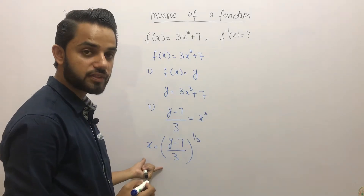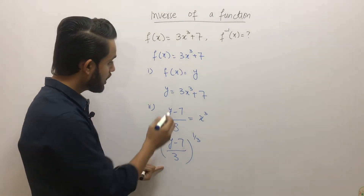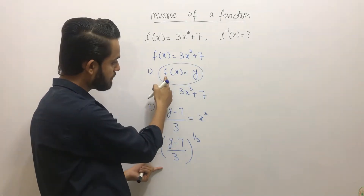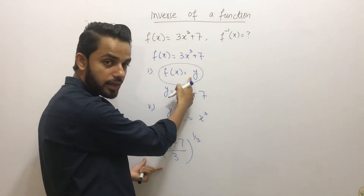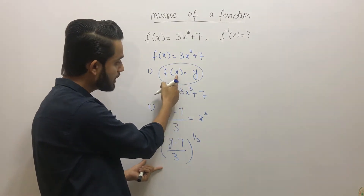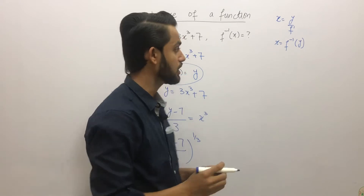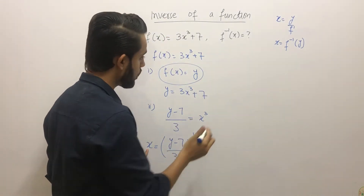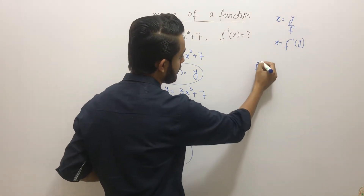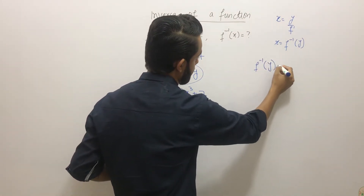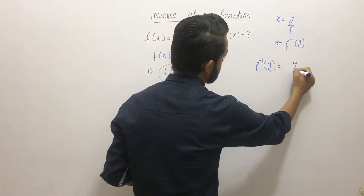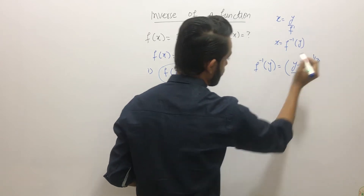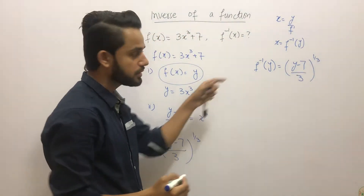Step 3: from step 1 we know f(x) = y, meaning x will always be replaced. So we replace x with f⁻¹(y) and write f⁻¹(y) = ((y − 7)/3)^(1/3).